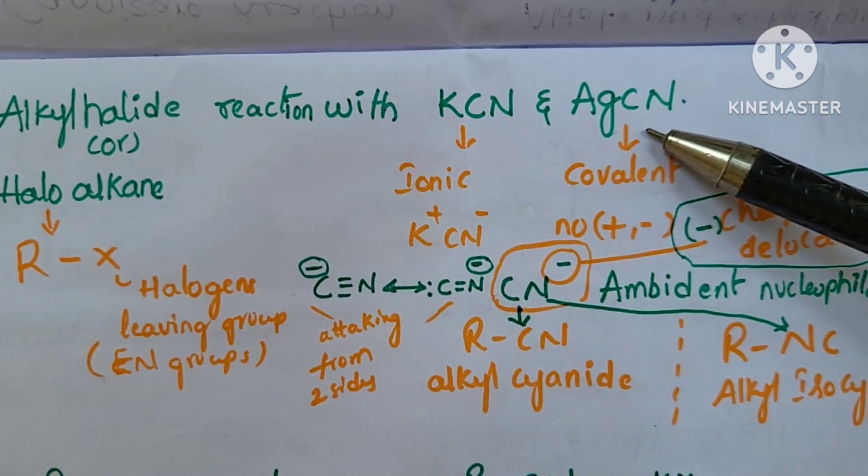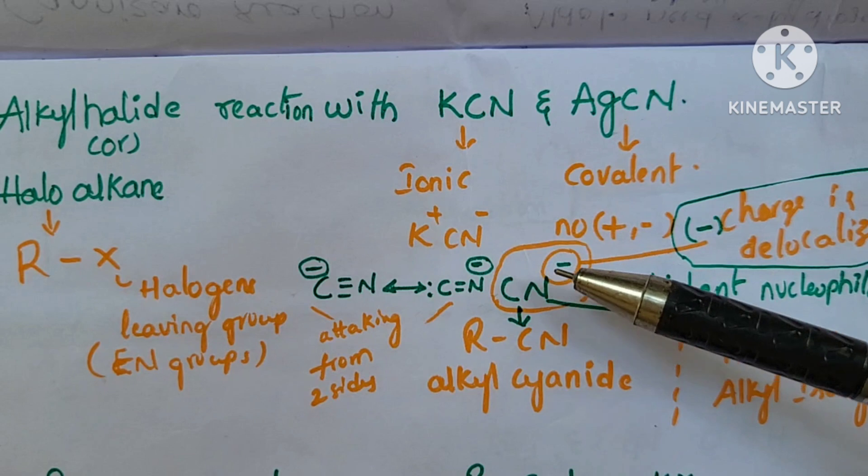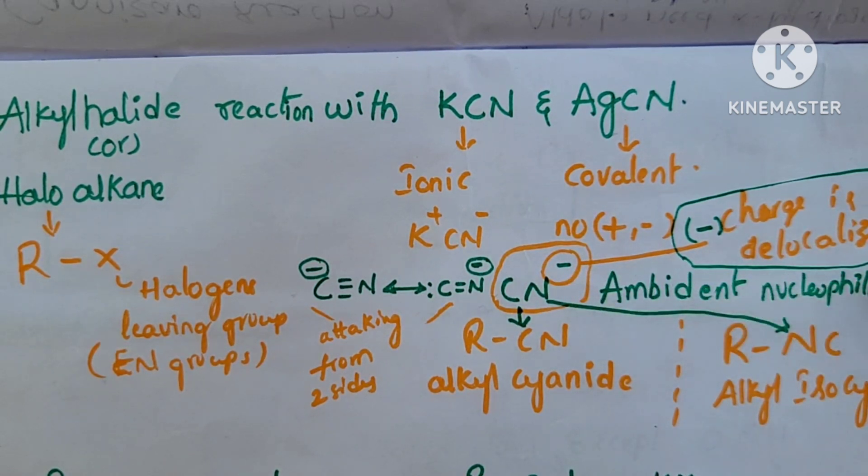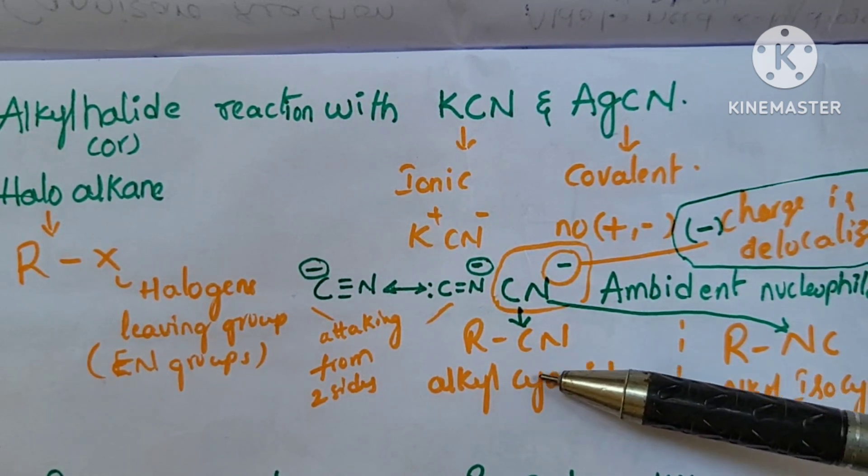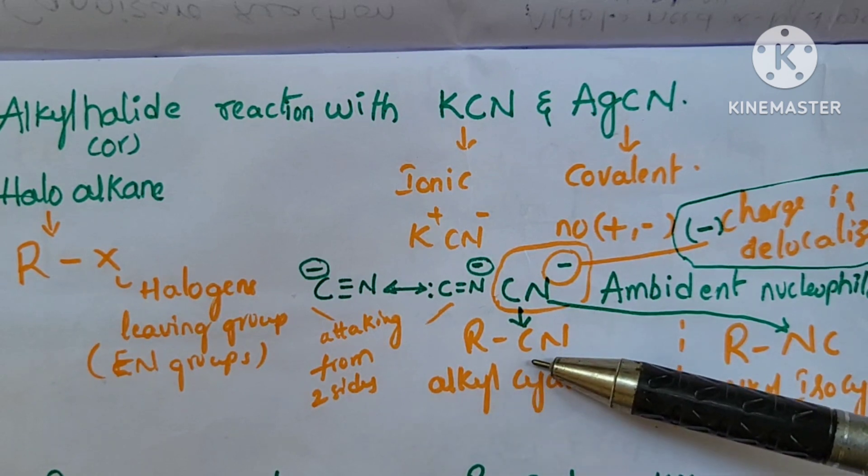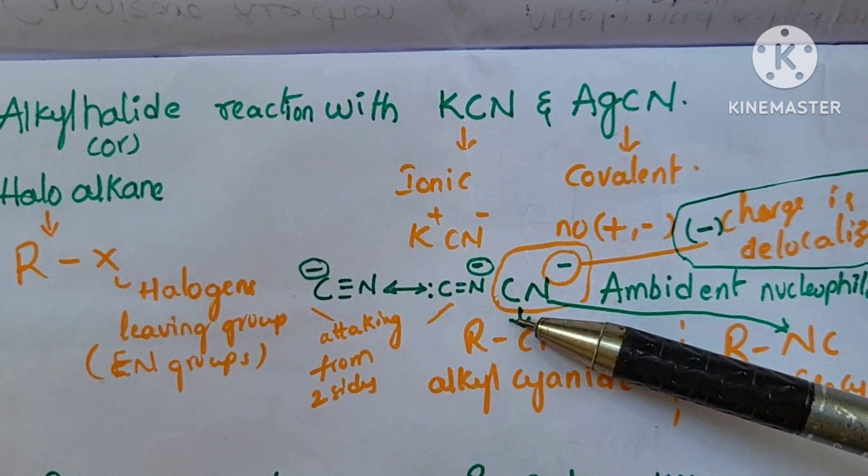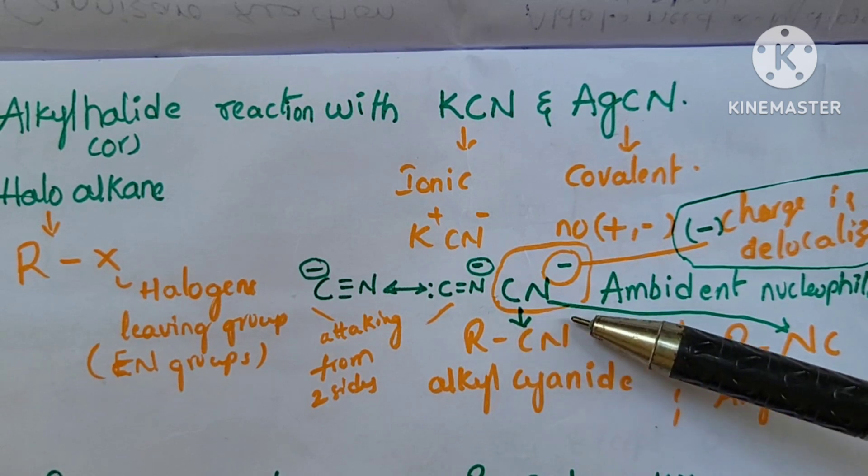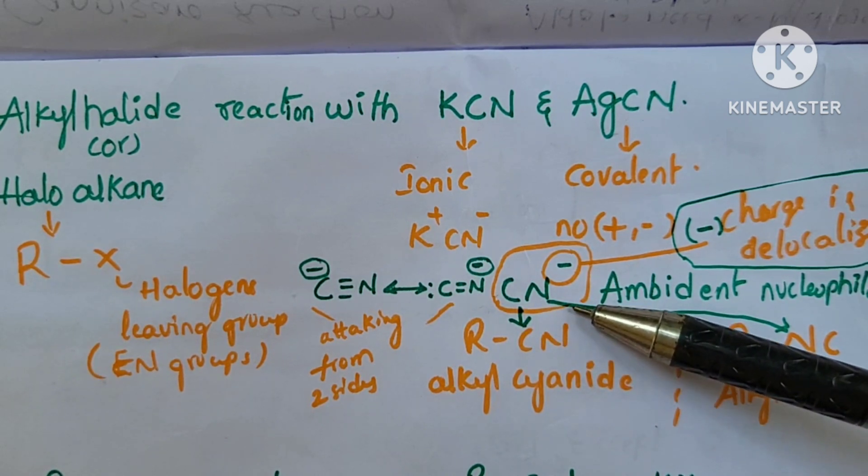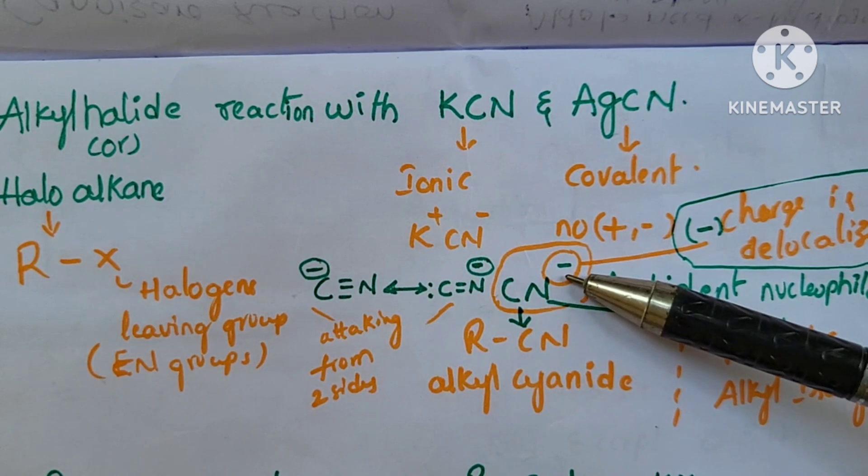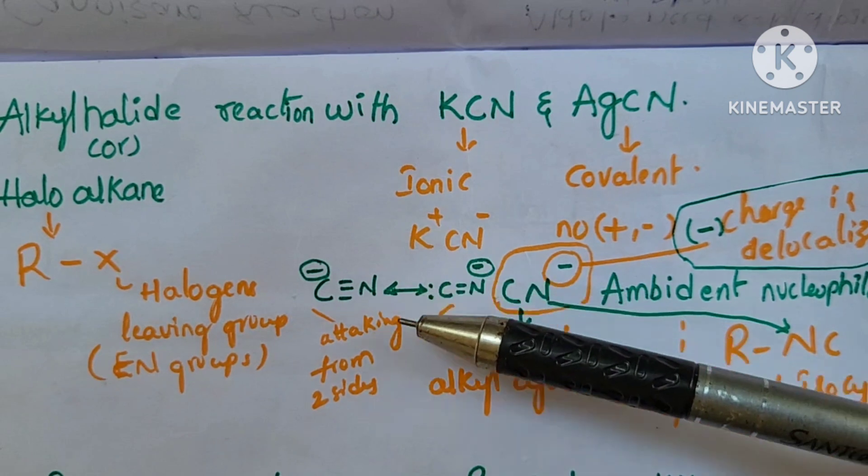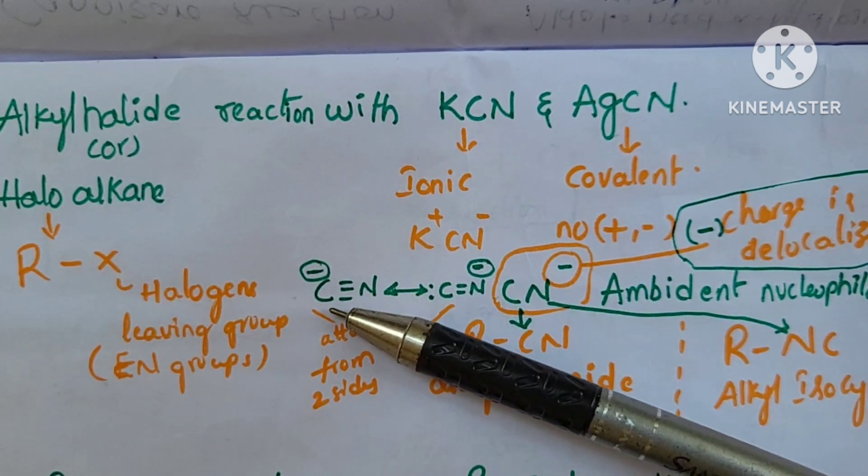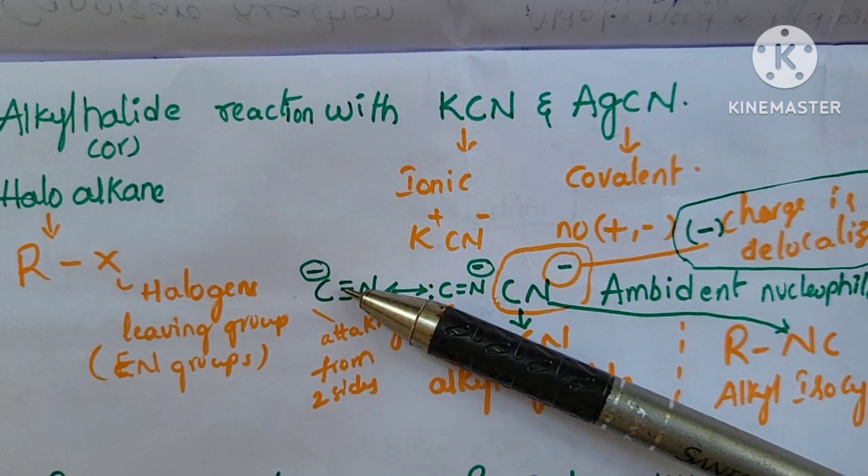KCN and AgCN both have the CN group. This CN is an ambident nucleophile. Ambident nucleophile means two atoms - these two atoms are carbon and nitrogen. Both carbon and nitrogen have electron density. So this negative charge will be delocalized. Delocalized means place change. CN shows resonance, so here resonance is delocalization.